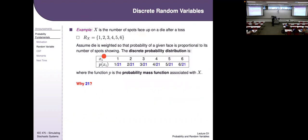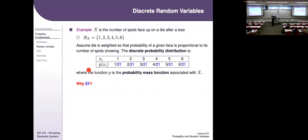As an example, let X be the number of spots showing on a die after a toss. Suppose the die is weighted so that the probability of a given face is proportional to the number of spots on that face. Then the probability of getting one spot is 1/21, two is 2/21, all the way up to six is 6/21. Why 21 in all denominators? Because the numerators 1 through 6 add up to 21, and all probabilities must sum to one — so we normalize by dividing by 21.